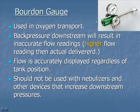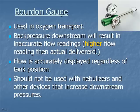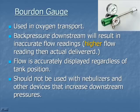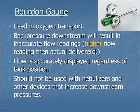Let's take a closer look at the Bourdon gauge. This type of gauge is primarily used in oxygen transport. Back pressure downstream will result in an inaccurate flow reading — if we cause an obstruction downstream, the flow reading on the gauge will read higher than what the patient is actually getting. So if I were to obstruct the tubing, I would want to know there's no flow, but this gauge can actually read higher. That's a disadvantage.